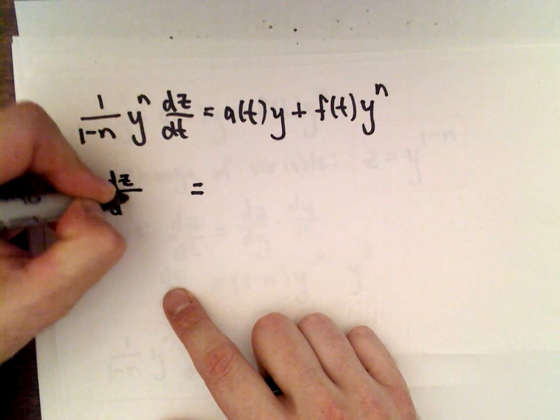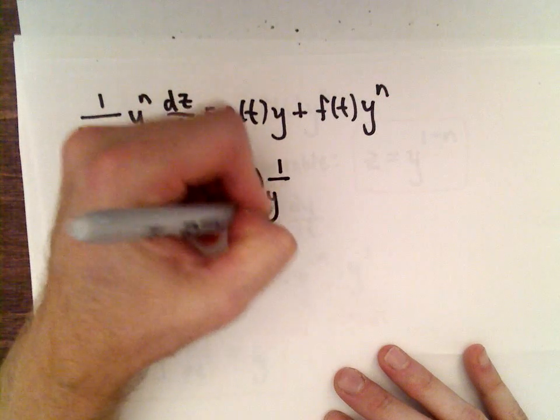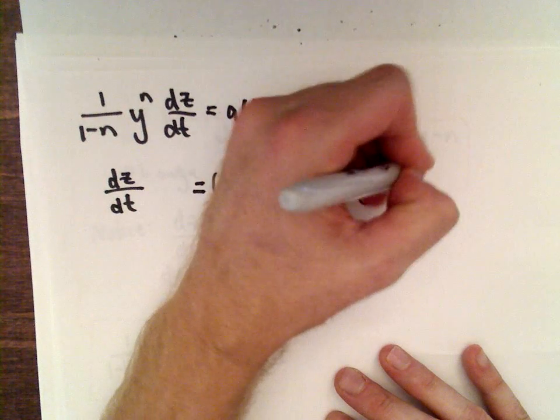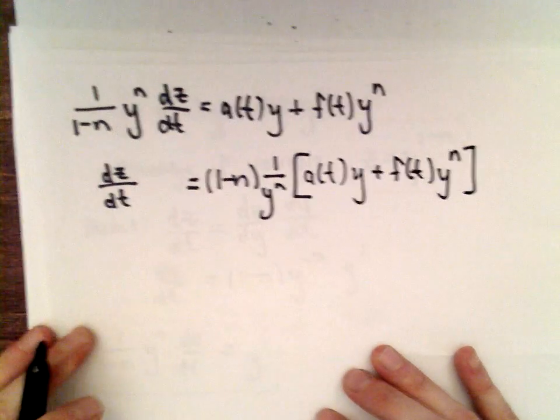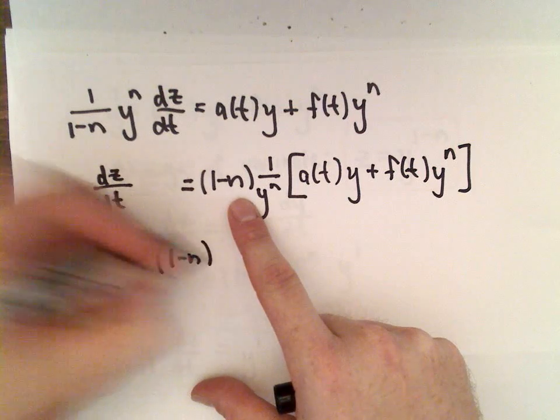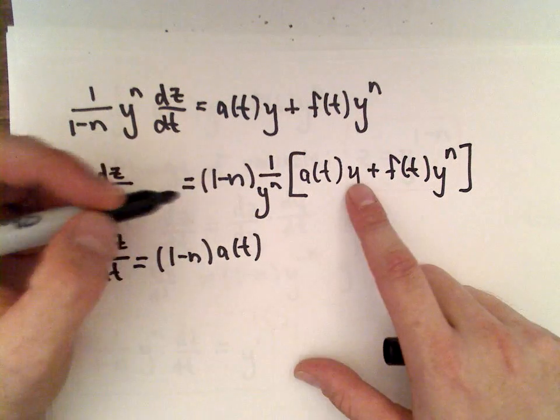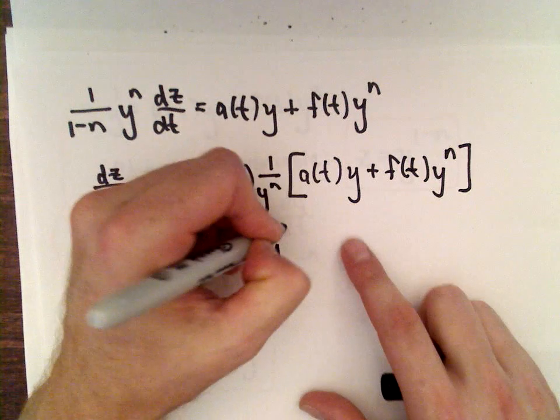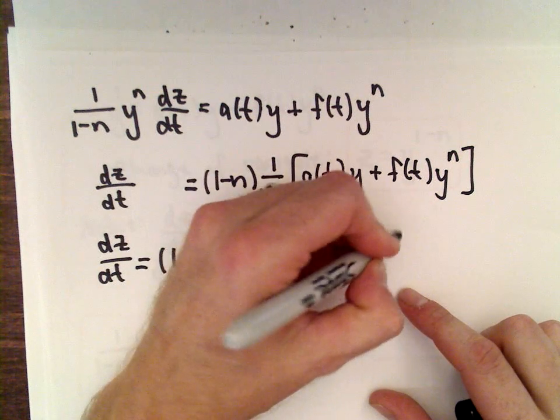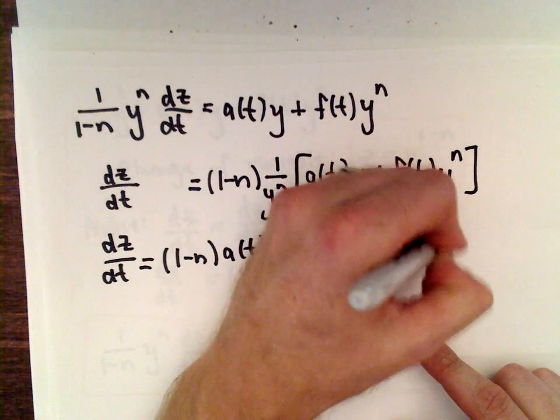What I'm going to do next here is I'm going to solve for dz/dt. So to solve for dz/dt, I would have to multiply both sides of the equation by 1 minus n, and I would also have to divide by y^n. So I'm going to have dz/dt. If I distribute, I'm going to have (1 minus n) times this function a(t). And notice now that I would have y to the first divided by y^n. Well, y to the first divided by y^n, that's going to give me y to the power of 1 minus n. Hey, that looks familiar. And then we're going to have plus (1 minus n). I'm going to have y^n divided by y^n. That's just going to leave me with 1. And then we still have this function f(t) floating around.